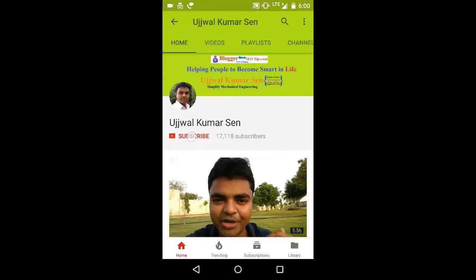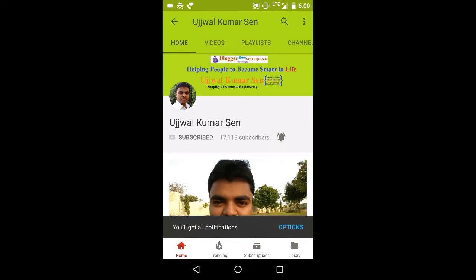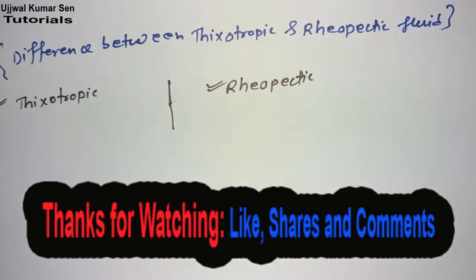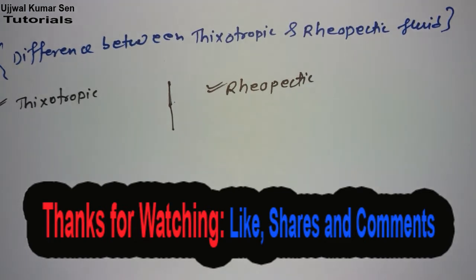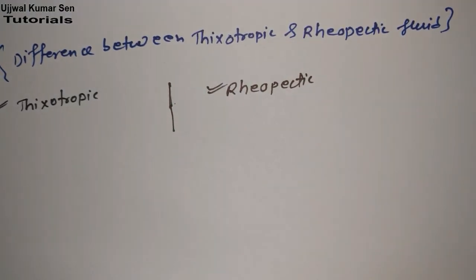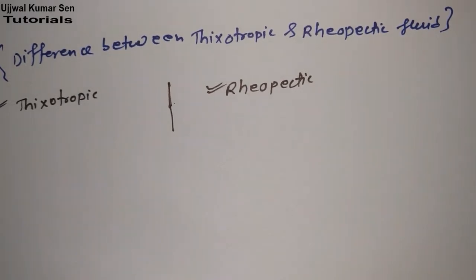Click on the subscribe button and press on the bell icon to watch all new videos. You have watched my last tutorial in which I talked about rheological classification of fluids. Extending that tutorial, we have two other types of fluids: one is thixotropic and another one is rheopathic.